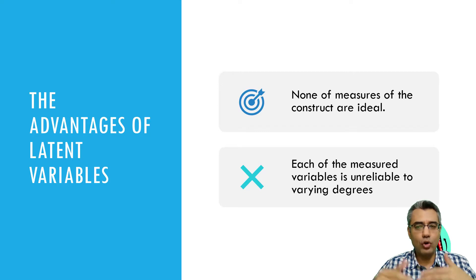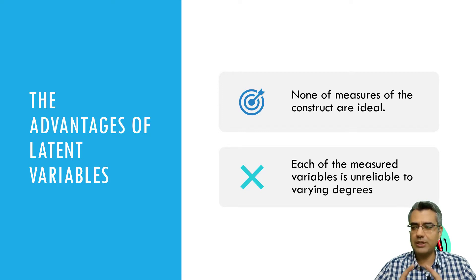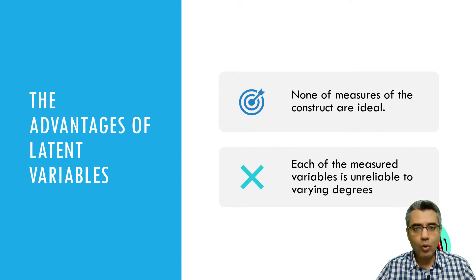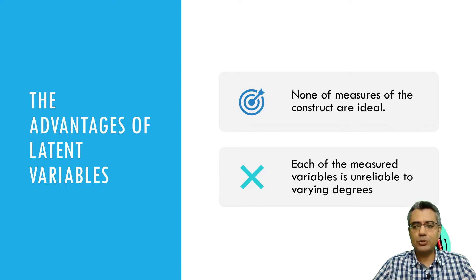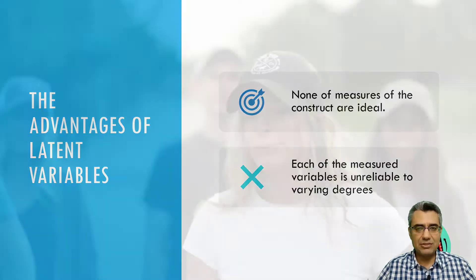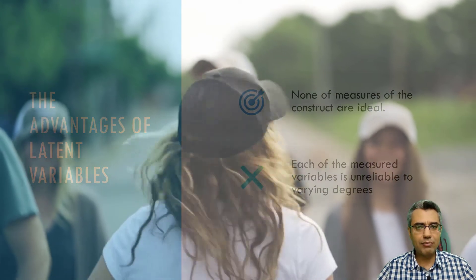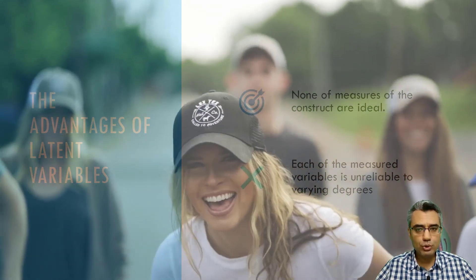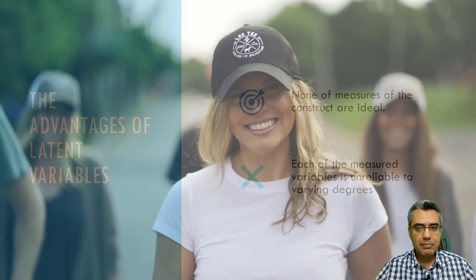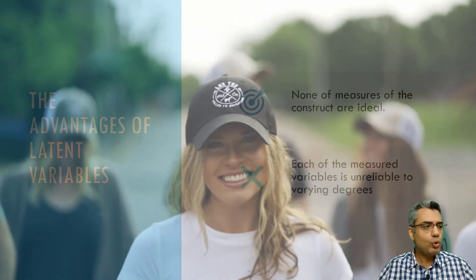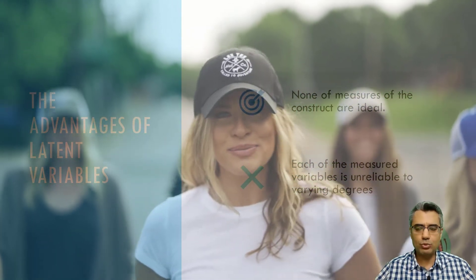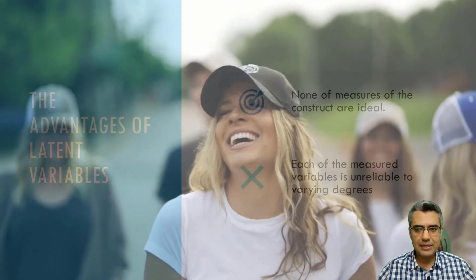Latent variables, or latent constructs — sometimes referred to as constructs, latent variables, or latent constructs — all refer to the same thing. These are variables that we cannot measure directly. For example: satisfaction, quality of life, attitude, intention to use, and body image. There is no instrument we can connect to someone's body or brain to directly read a measure.